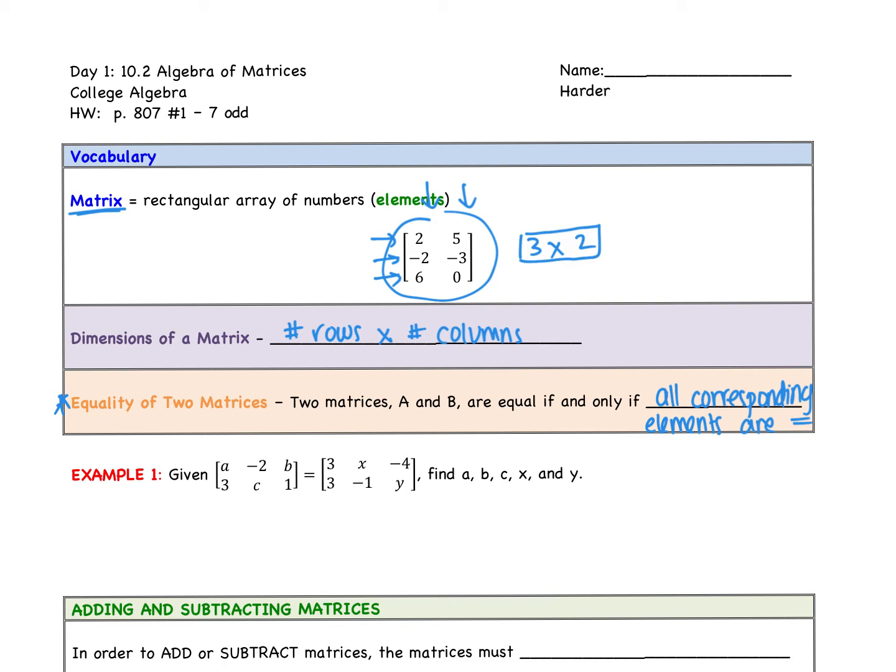Example one is how you're going to see this. Given one matrix is equal to another matrix, find A, B, C, X, and Y. If these two matrices are equal, all corresponding elements are equal. So this first element has to be equal to that first element. So there we go, we get A equals three.